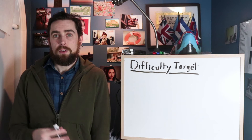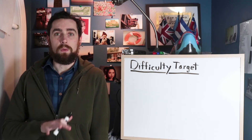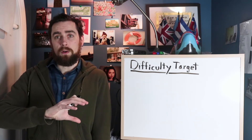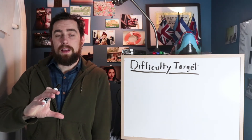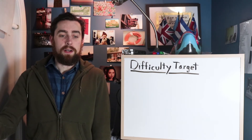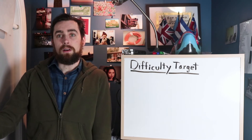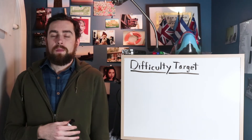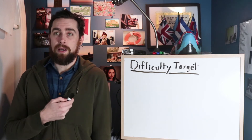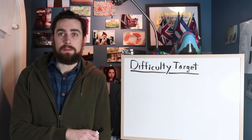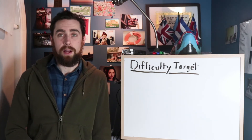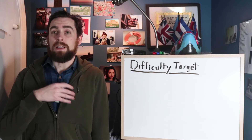What the Bitcoin protocol does is every 2016 blocks, or roughly two weeks, the protocol looks at the timestamps for all of those 2016 previous blocks and determines whether it took longer or shorter than two weeks. If it took longer than two weeks for those 2016 blocks to get mined, the protocol will lower the difficulty, making the puzzle easier to solve so it happens quicker.